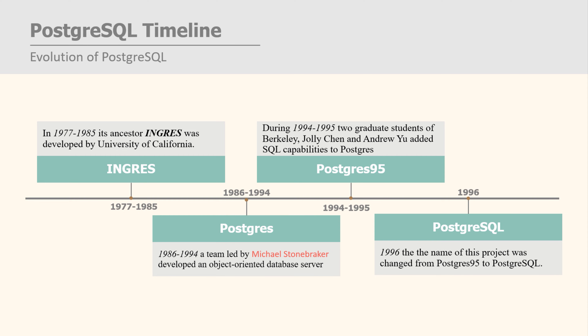Later, in 1996, the name of this project was changed from Postgres95 to PostgreSQL. And that's how PostgreSQL came to existence.